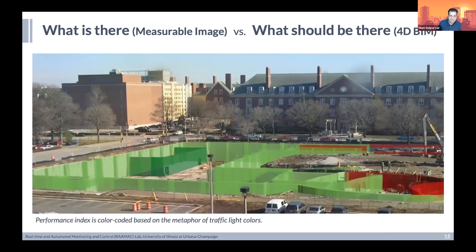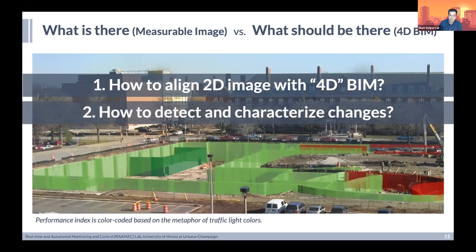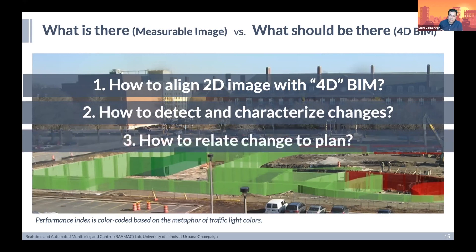Mapping that into academic work means we have to ask ourselves whether we have the foundational capabilities. One question is: how can I align a simple 2D image against a BIM or 4D BIM that may or may not show the same types of elements visible on site? The second question is: is there a way to detect and characterize changes in the scene? And if I can detect them and understand what's going on, can I relate that back to the plan — whether that's the BIM or the scheduling baseline?